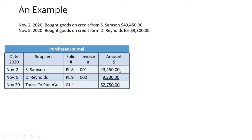At the end of the period — November 30 — the purchases journal is balanced off, and you see the entry says 'transfer to purchases account.' It is in the general ledger; GL stands for general ledger, and the page number in the general ledger is 1. Then you put the total: 43,450 plus 9,300 gives you 52,750.